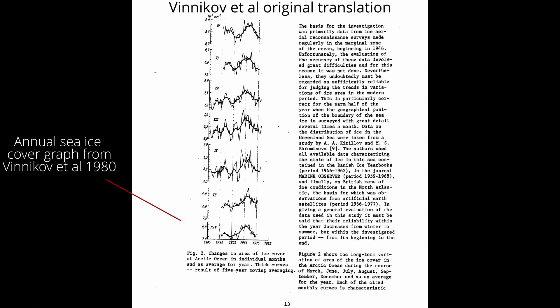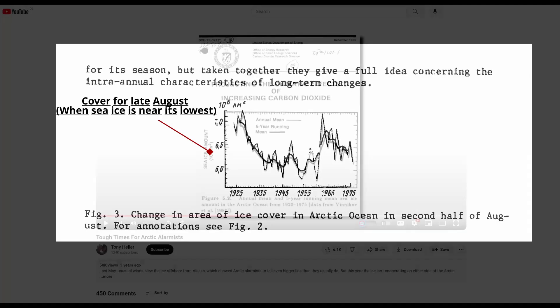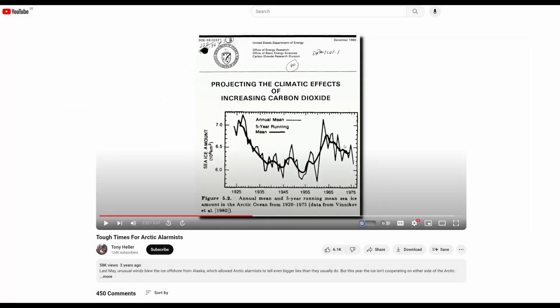The original translation is available online. Vinikoff produced an annual sea ice cover graph, but he also showed cover for each month. However, Heller used only the late August ice cover graph, when sea ice is very low, but suggested it was annual sea ice — by using a mistranslated version of Vinikoff found in later documents.